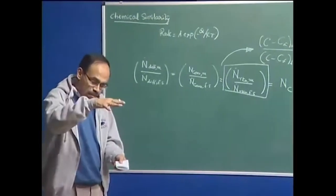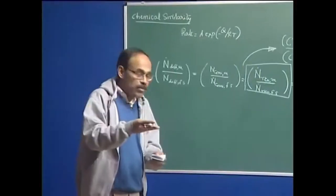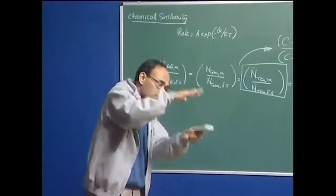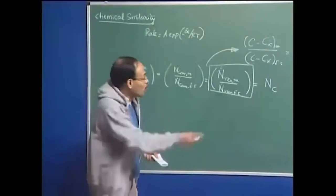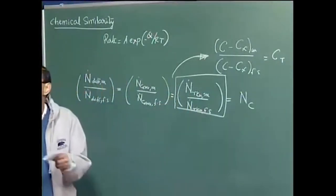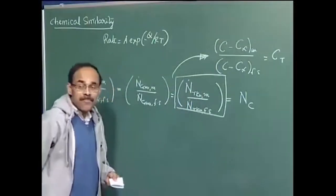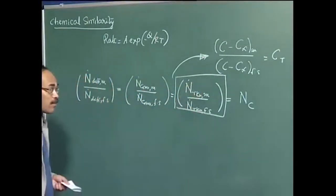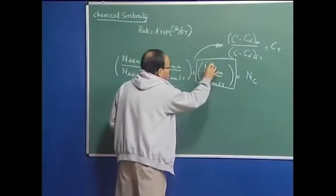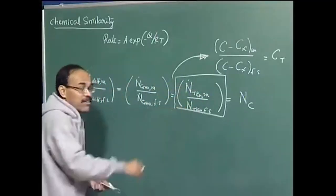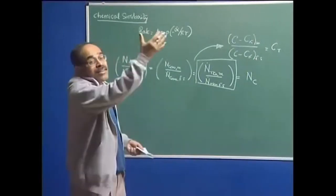We have a system in which we have geometrical similarity, mechanical similarity, then thermal similarity. We try to operate the system at similar but not same temperatures, and yet we would not be able to satisfy this because we would not find species which at that particular temperature react to give proportionate reaction rates between the model and prototype. So it is very difficult to achieve similarity in terms of mass generated or depleted because of chemical reactions when the model is operated at a different temperature than the full scale.